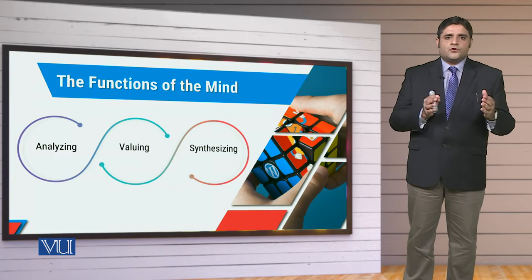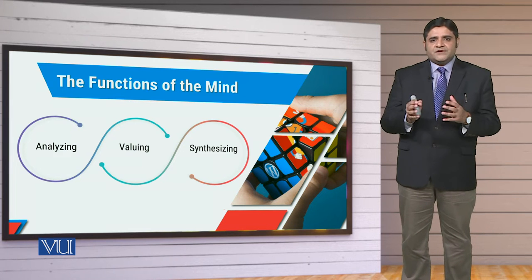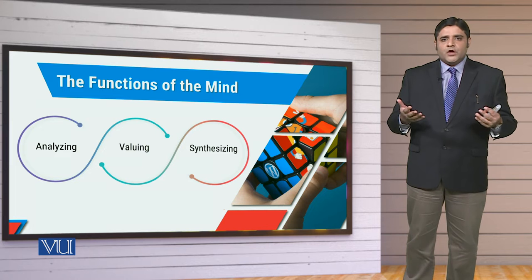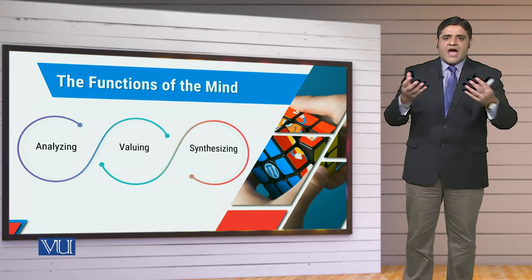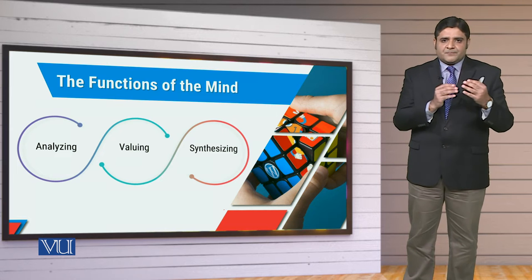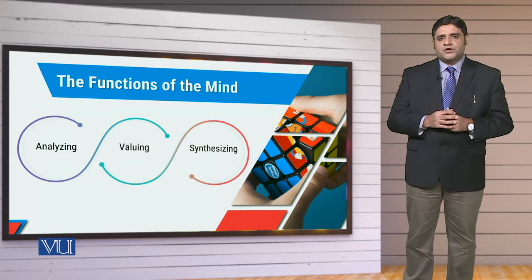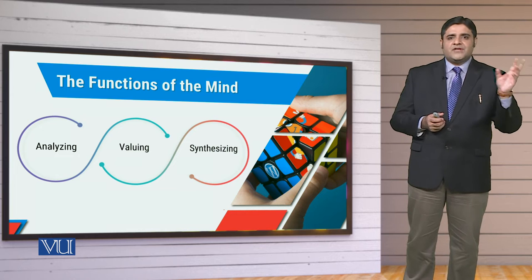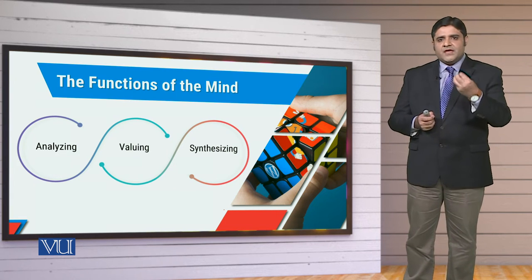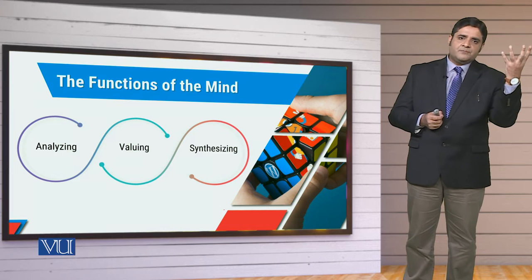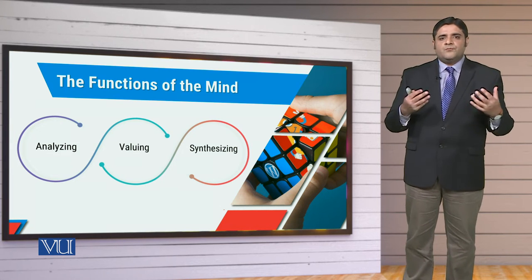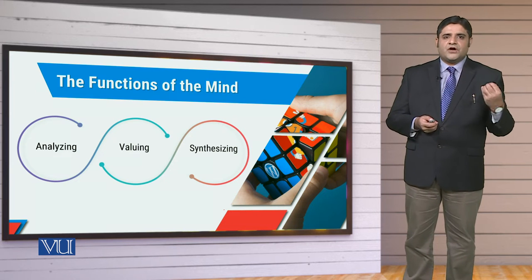So human mind cheezo ko analyze kerta hai, human mind cheezo ko value assign kerta hai, or sath-hi-sath human mind cheezo ke baare mein synthesis bhi karta hai. And synthesis se muraad hai — aap smaller chunks ko jod kar aap bigger canvas develop ker lo. Aap chho'te-chho'te perspectives ko jod kar, aap bade situation ko samajhne ki koishish karo. So that is something like opposite to the analysis part. Mind bigger things ko smaller components mein, smaller things ko bigger conversion mein, or us ke sath-sath valuing ka kaam — yeh kar raha hoga. So these are the three main, most important functions of the mind.